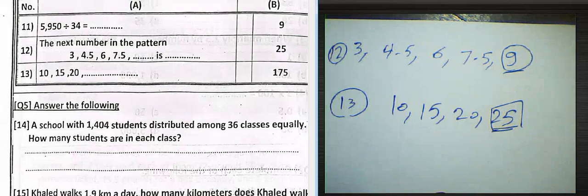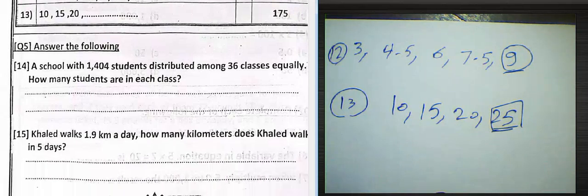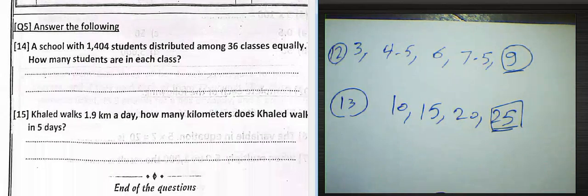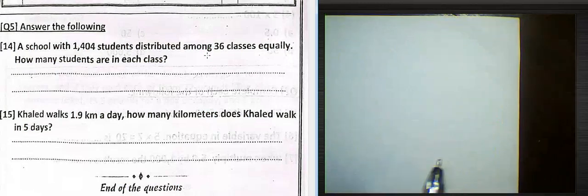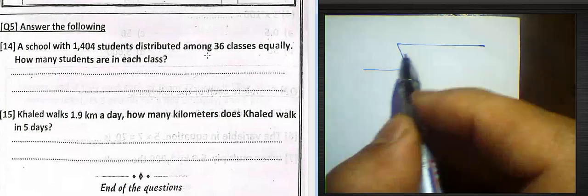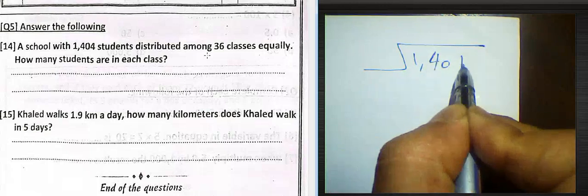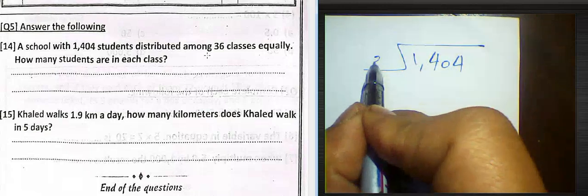Look at question 14. A school with 1404 students distributed among 36 classes equally. How many students in each class? We can find the number in each class by dividing the total here, 1404 by 36.